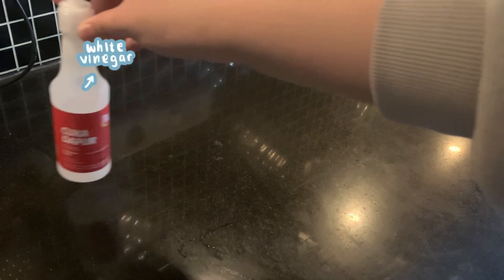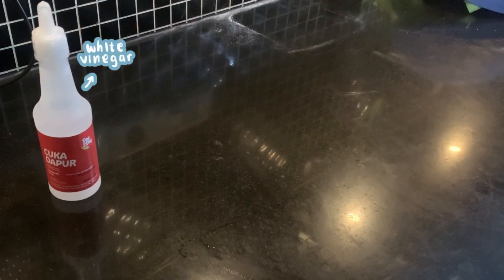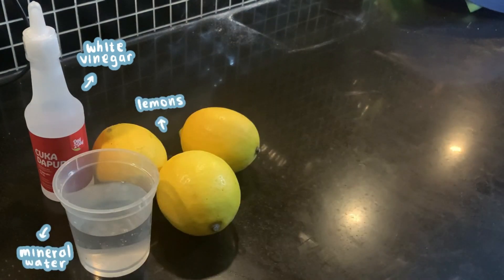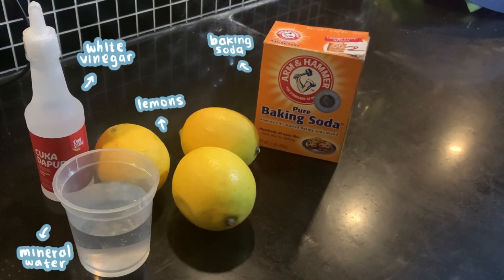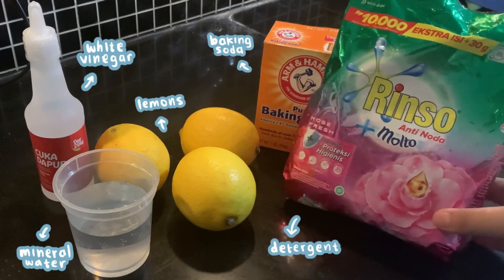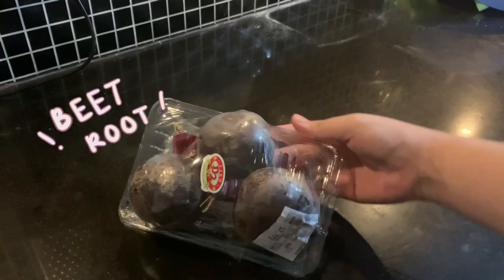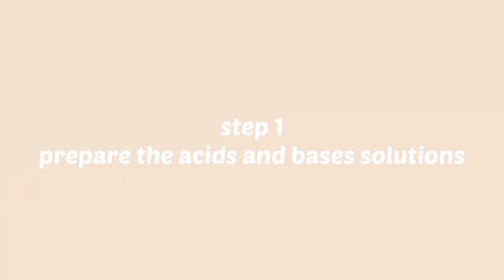The acid and base solutions you'll need for this experiment are: white vinegar, lemon, mineral water, baking soda, and detergent. And for the natural indicator, today we're going to use beetroot. Step one is to prepare the acid and base solutions.